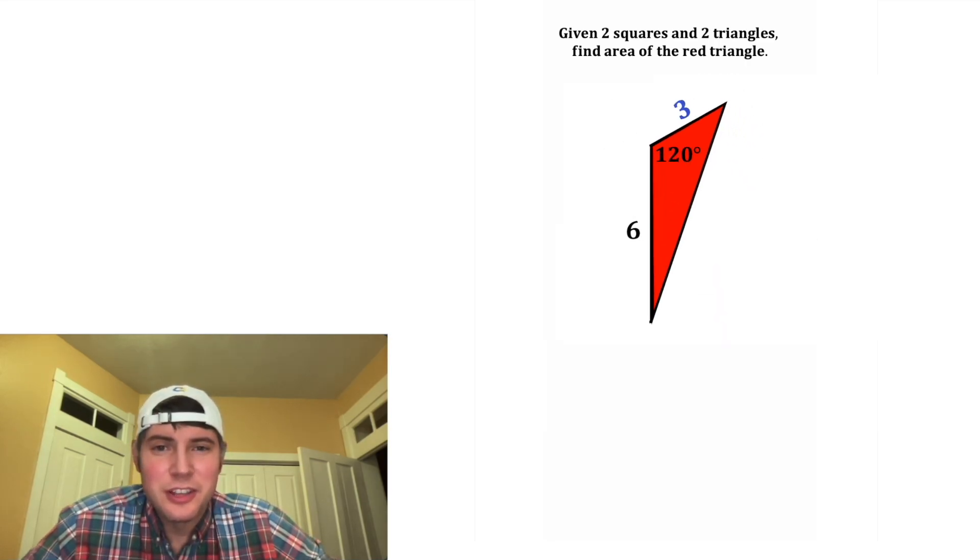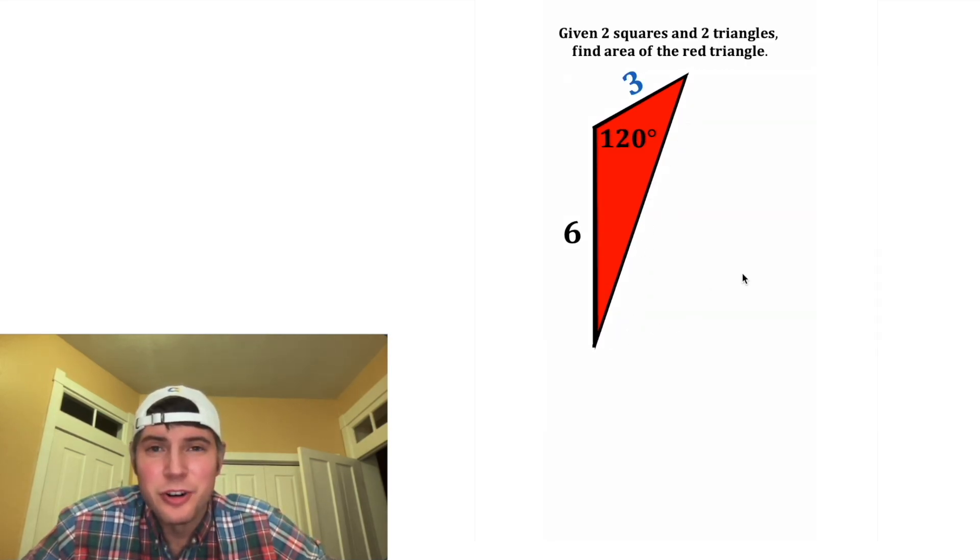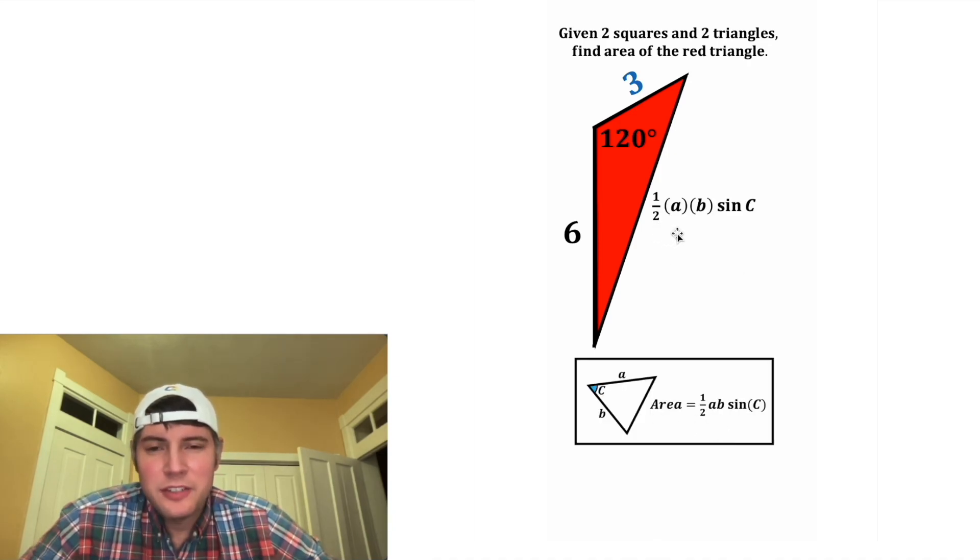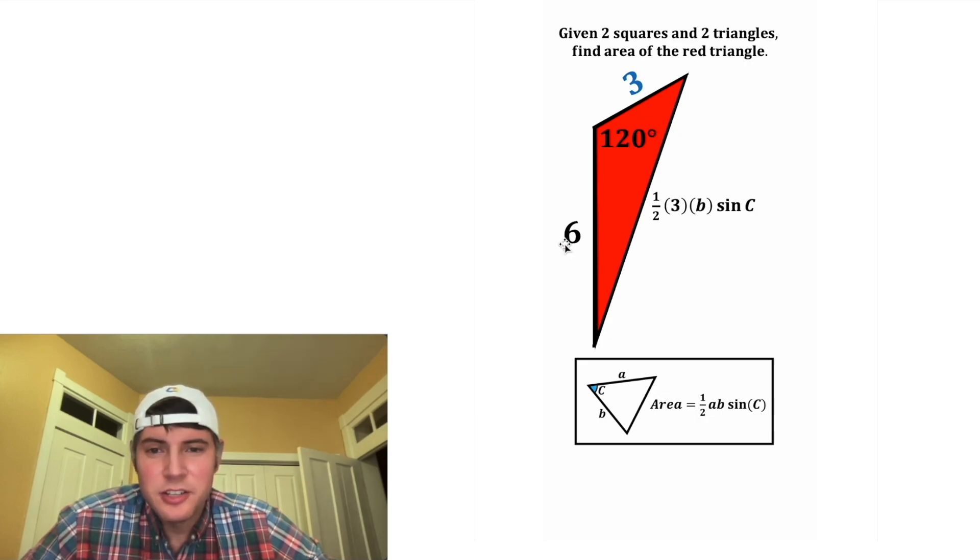And now let's focus on this. We're trying to find the area of this red triangle. We're going to use these notes, where the area is equal to one half times one side times another side times the sine of the angle in between them. So our first side is going to be three, the other side is going to be six, and the angle between these two sides is equal to 120 degrees.